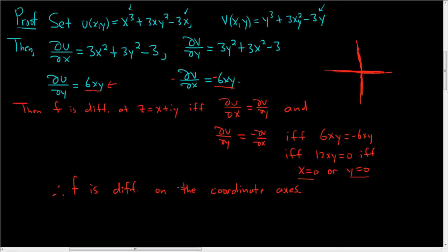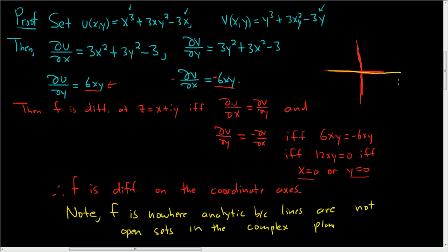Now we still have to show that it's nowhere analytic. That's kind of just like a remark. It should be clear that it's nowhere analytic because straight lines are not open sets in the complex plane. So note, f is nowhere analytic because lines are not open sets in the complex plane. We know it's differentiable only on these lines. And for a function to be analytic, it has to be differentiable on an open set. So if I pick a point here, this is not an open set. In fact, there's no open set around this point on which it's analytic either. So I hope that helps.